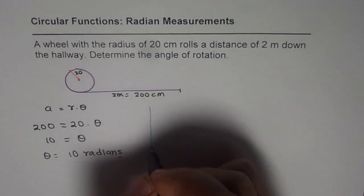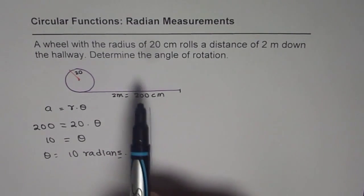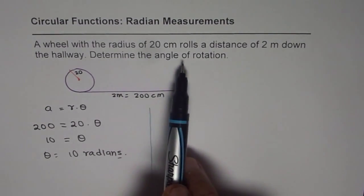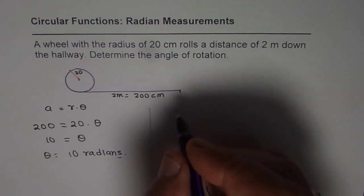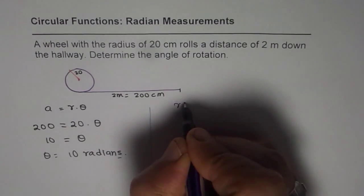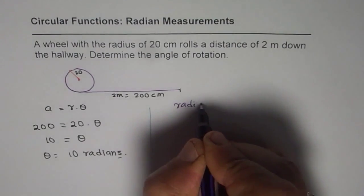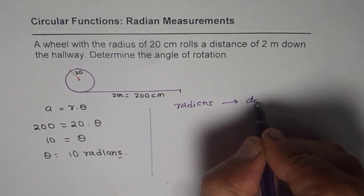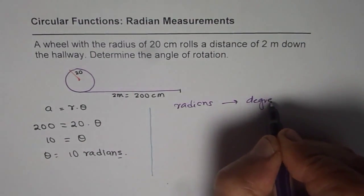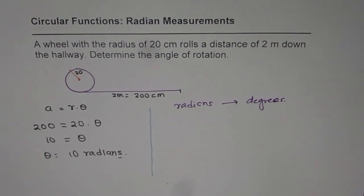That answers the question: the angle of rotation is 10 radians. Now, in addition, we are going to convert radians to degrees. Let's convert this and find our angle in degrees as well.